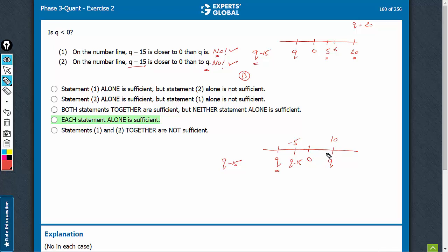If q were really big, say if q were 100, then q minus 15 would be 85, and in this case, q minus 15 would be closer to q than to 0.